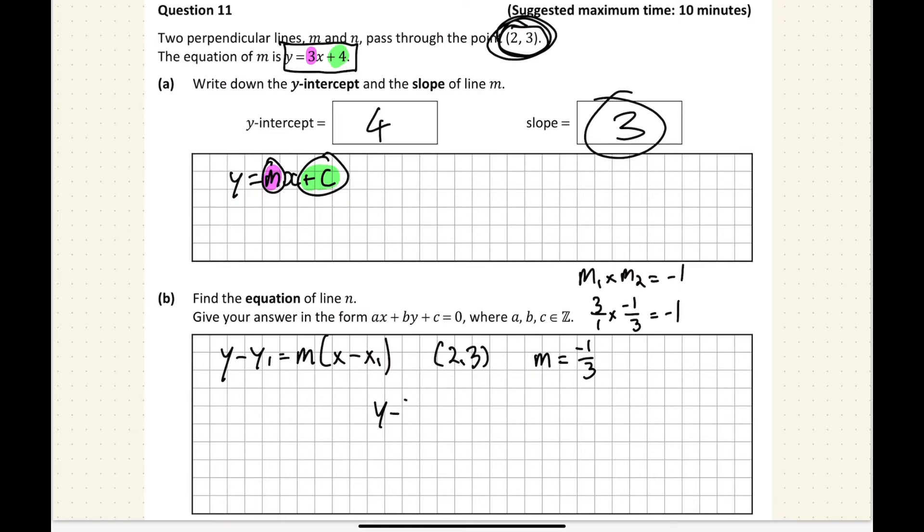So let's sub our values in. We get y minus y1, which is 3, equals m, which is minus 1 over 3, bracket x minus x1, which is 2. So a little trick you can use here is the denominator can get multiplied by everything here, and the numerator can get multiplied by everything here. It does algebraically make sense, but I'm not going to explain why in this video.